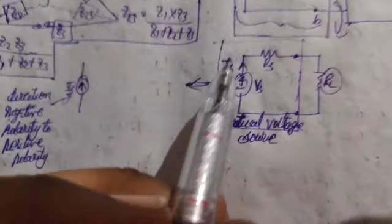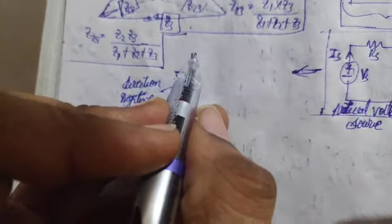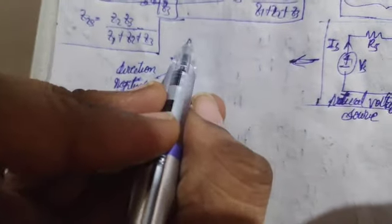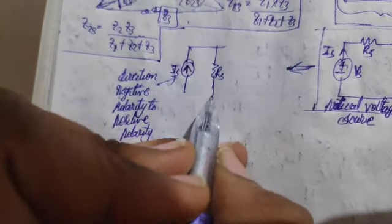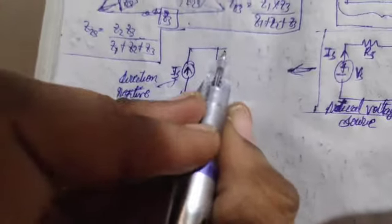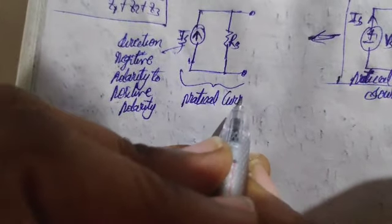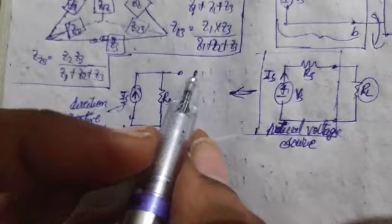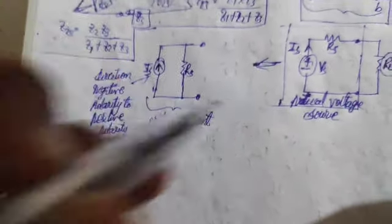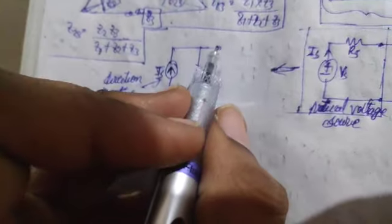In the practical voltage source, the internal resistance RS is in series with the voltage source. But when it comes to the practical current source, this internal resistance RS is connected in parallel with the current source. The current source is then connected to any network containing passive elements interconnected in series or parallel.